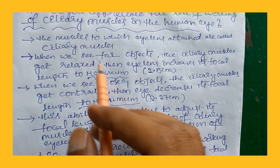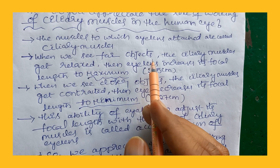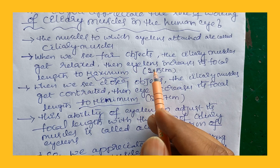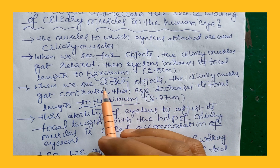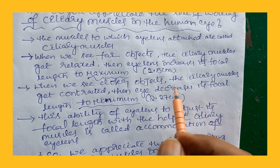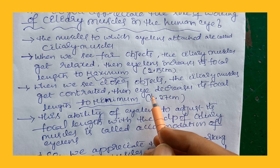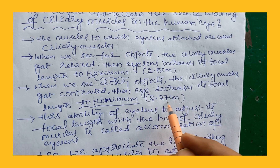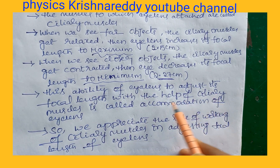To summarize: the muscles to which the eye lens is attached are called ciliary muscles. When we see closer objects, ciliary muscles get contracted and they compress the eye lens — the size and radius of the lens decreases — then the eye lens decreases its focal length to a minimum value of 2.27 cm. This ability of the eye lens to adjust its focal length with the help of ciliary muscles is called accommodation of eye lens.